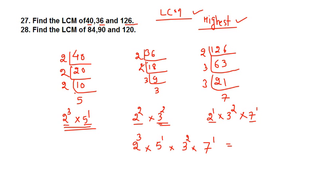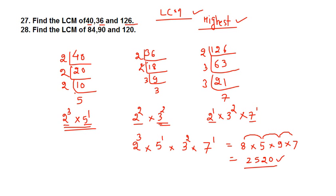The highest power of 5 is 1 and the highest power of 7 is also 1. So the LCM will be 2 to the power 3 (which is 8), multiplied by 5 to the power 1 (which is 5), multiplied by 3 to the power 2 (which is 9), multiplied by 7 to the power 1 (which is 7). Multiplying: 8 into 5 is 40, 40 into 9 is 360, and 360 into 7 is 2520.